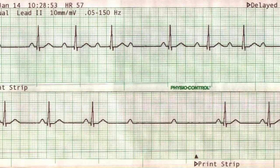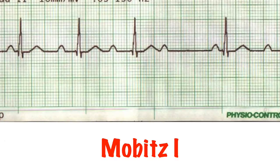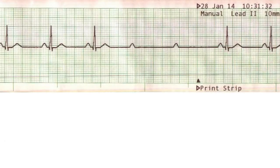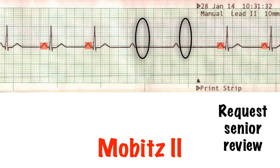Second degree heart block can be split into two types. Mobitz 1, also called Wenckebach, is defined by a progressively lengthening PR interval before dropping a QRS complex completely and resetting itself for the process to begin again. Mobitz 2, rather boringly, doesn't have another name. It's defined by a dropped QRS complex with an otherwise regular PR interval. It can occur in a pattern, or sometimes it can be completely random.